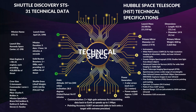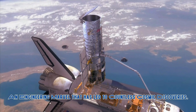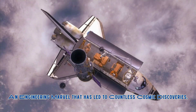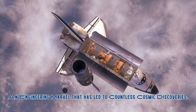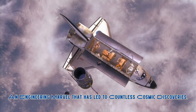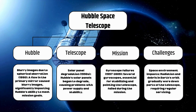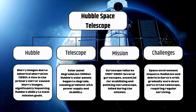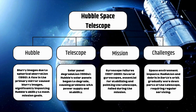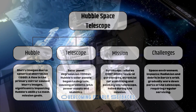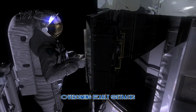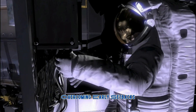Shortly after its deployment, a major flaw in Hubble's primary mirror was discovered, causing spherical aberration that blurred the telescope's images. To address the mirror flaw and ensure Hubble's long-term success, astronauts performed five servicing missions between 1993 and 2009. These missions not only repaired Hubble but also upgraded its instruments, ensuring the telescope's cutting-edge capabilities.